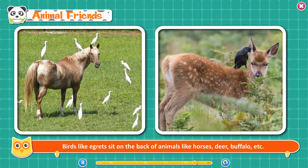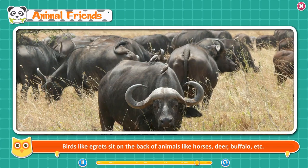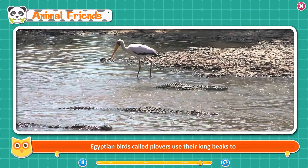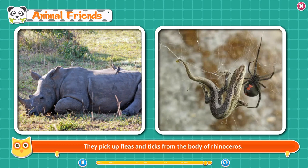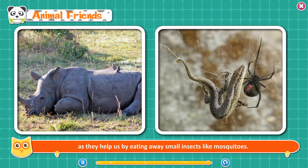Birds like egrets sit on the backs of animals like horses, deer, and buffalo and eat small insects hidden in their bodies. Egyptian birds called plovers use their long beaks to pick up bits of flesh from a crocodile's teeth. Rhinoceroses get rid of fleas and ticks with the help of ox-peckers, which pick up fleas and ticks from the bodies of rhinoceroses. Spiders and lizards are helpful to humans as they help us by eating away small insects like mosquitoes.